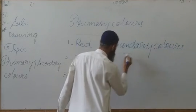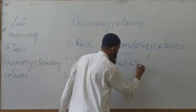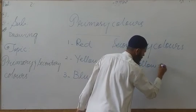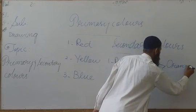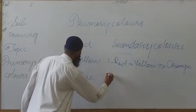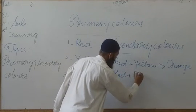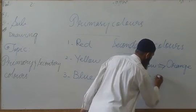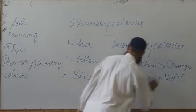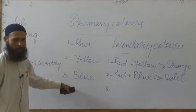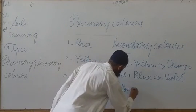Students, if we mix red and yellow, then we can easily make a secondary color — orange. If we mix red and blue, we get another secondary color — purple. And third, if we mix yellow and blue color, then we can easily make a green color.